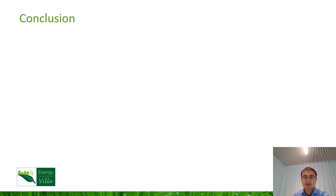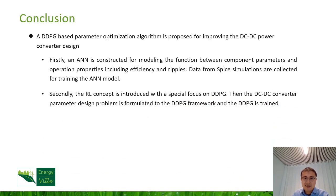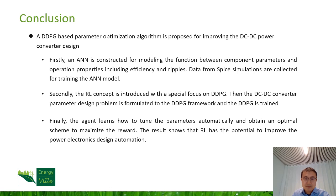So finally, it's the conclusion of the paper. In this paper, a DDPG-based parameter optimization algorithm is proposed for improving the DC-DC power converter design. Firstly, an artificial neural network is constructed for modeling the function between component parameters and operation properties, including efficiency and ripples. Data from SPICE simulations are collected to train the neural network. Secondly, the reinforcement learning concept is introduced with a special focus on DDPG. Then the DC-DC converter parameter design problem is formulated to the DDPG framework, and then the DDPG is trained. Finally, the agent learns how to tune the parameters automatically and obtain an optimal scheme to maximize the reward. The results show that reinforcement learning has the potential to improve the power electronics design automation.